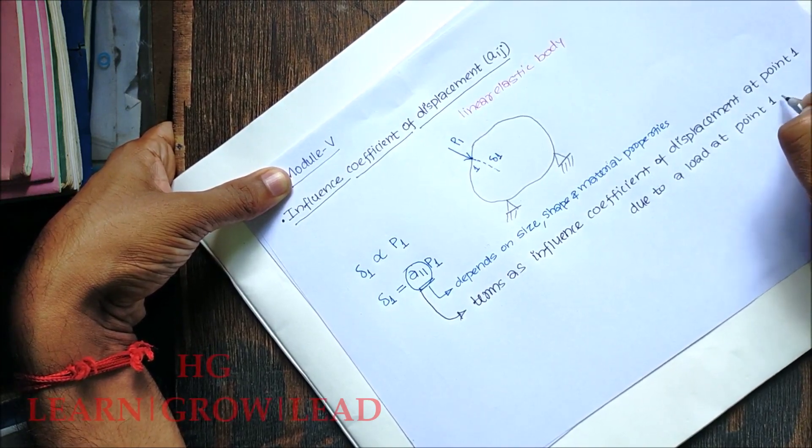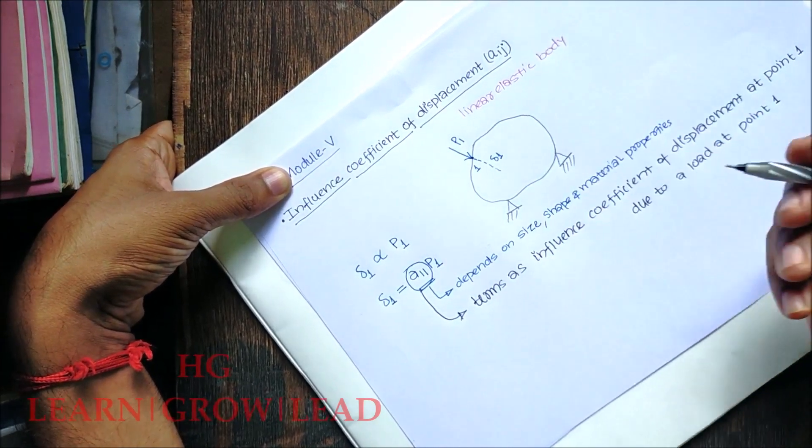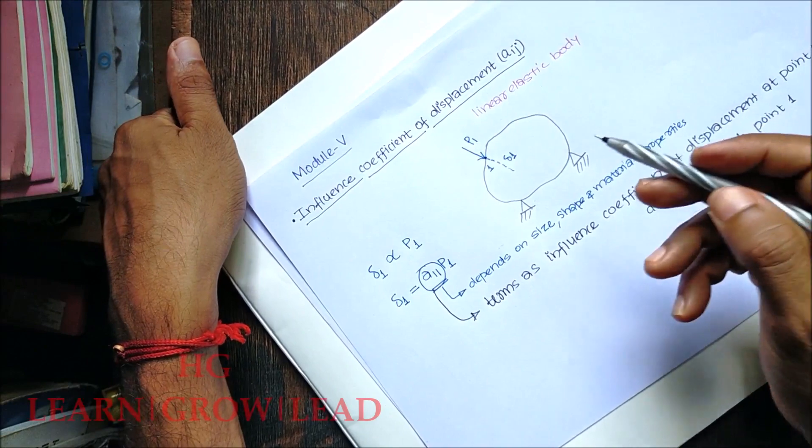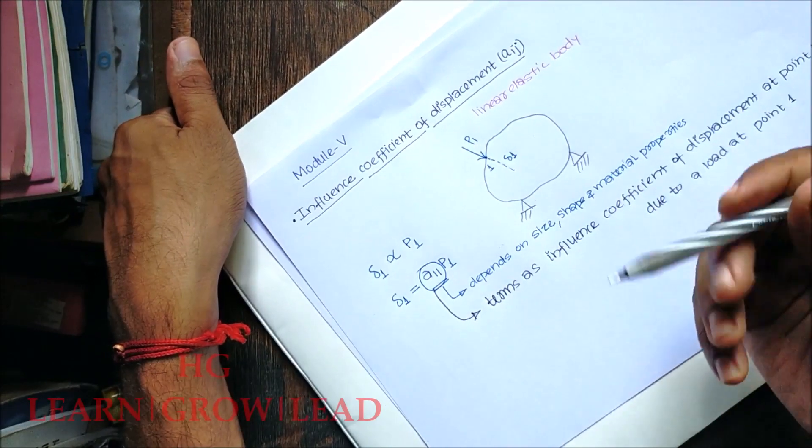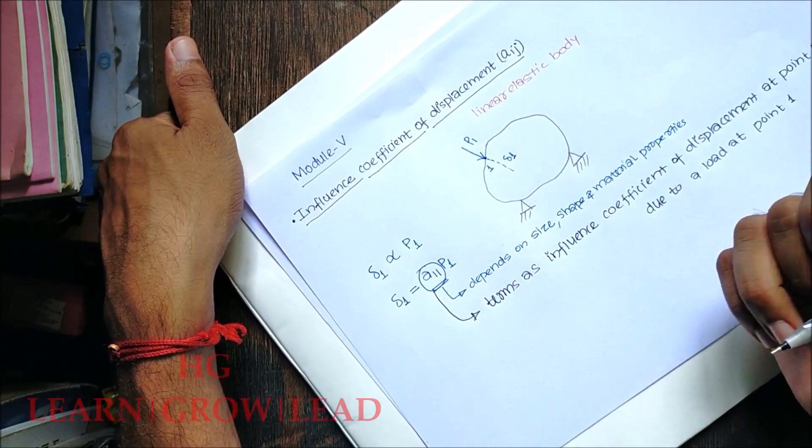So if we use the notation A-I-J, where I and J are two indices — the first index I and the second index J — A-I-J represents the influence coefficient of displacement.